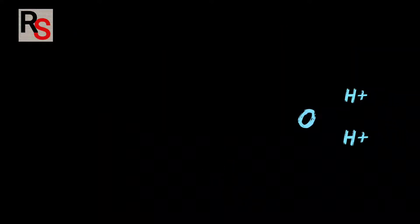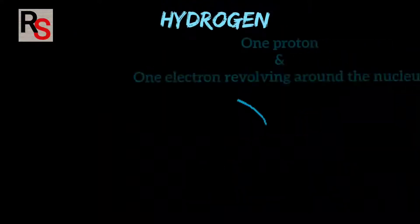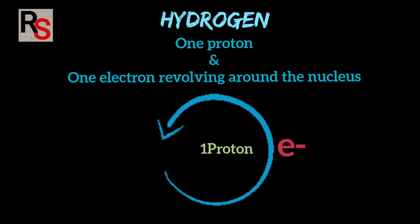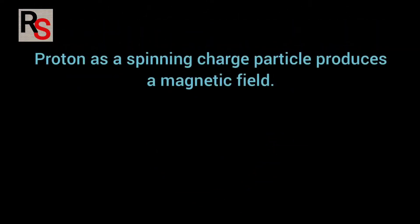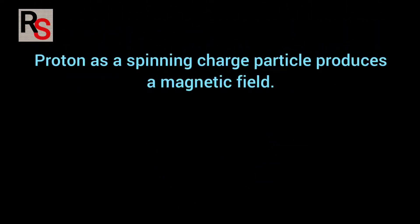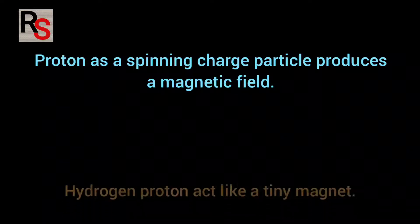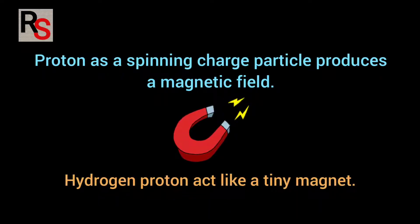As you know our body is composed of 70% of water. Each water molecule has two hydrogen atoms for every oxygen. Hydrogen nucleus composed of single proton with one electron revolving around it. Proton as a spinning charged particle produces a magnetic field. So hydrogen proton acts like a tiny magnet.